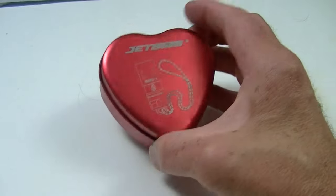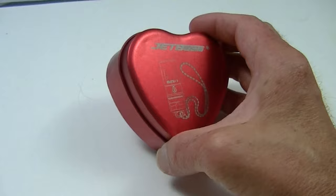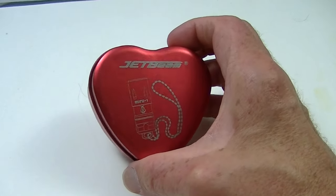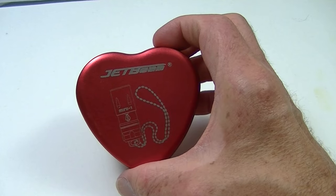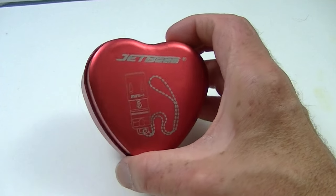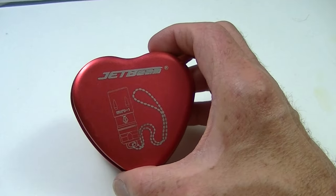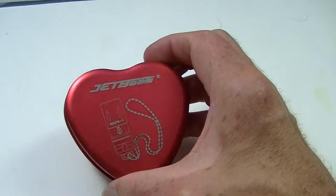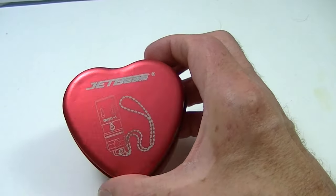You know, like some promo they'd give you on Valentine's Day. Here's your box of chocolates with the purchase of flowers. However, this is a flashlight. It's the Jetbeam Mini-1, and 'mini' hardly describes the size of this little flashlight which is meant for your keychain.